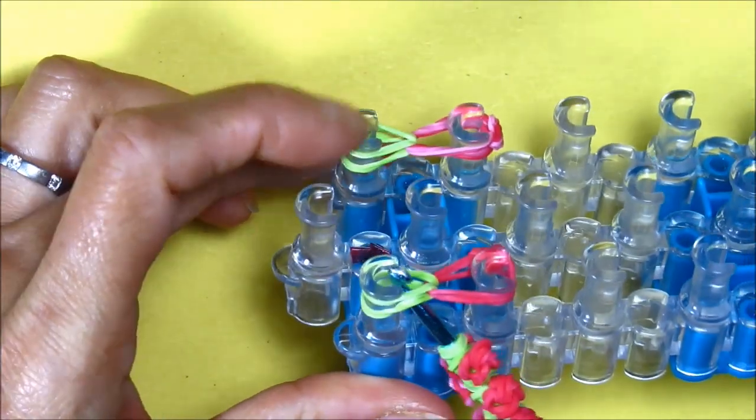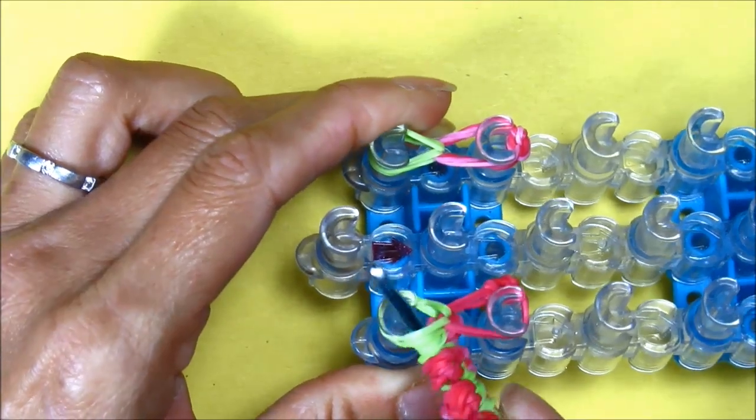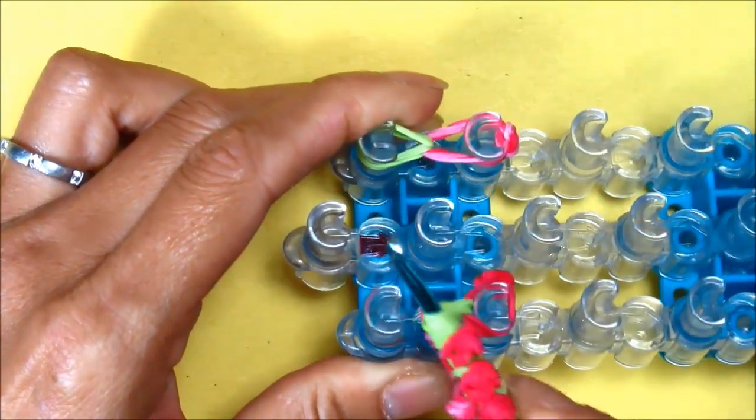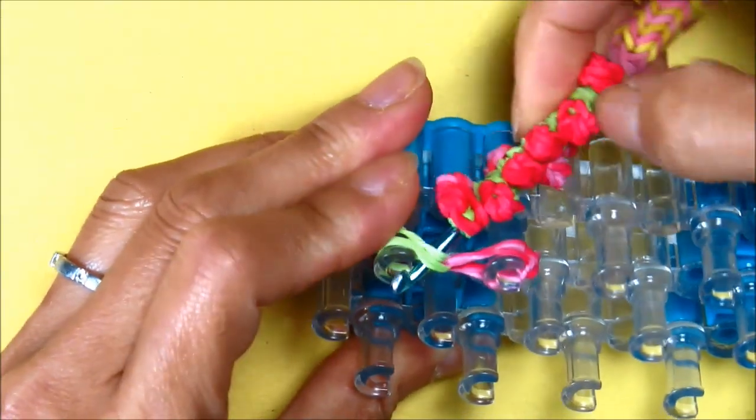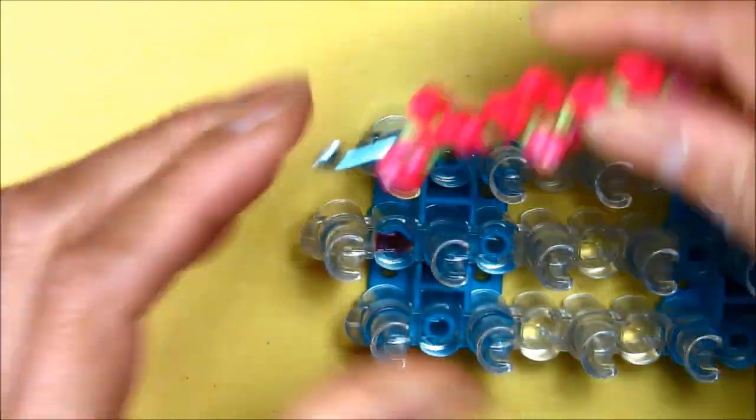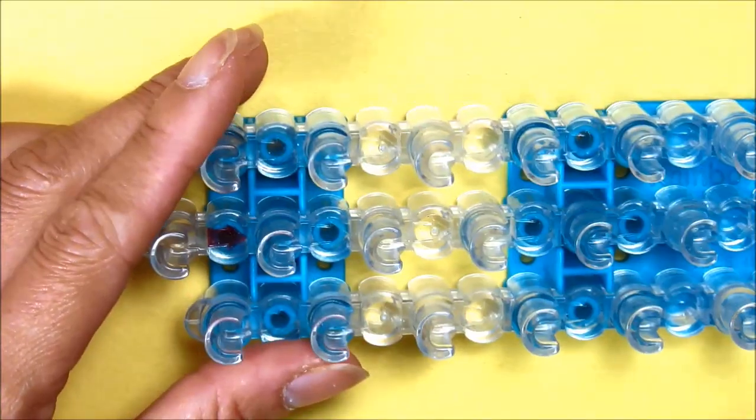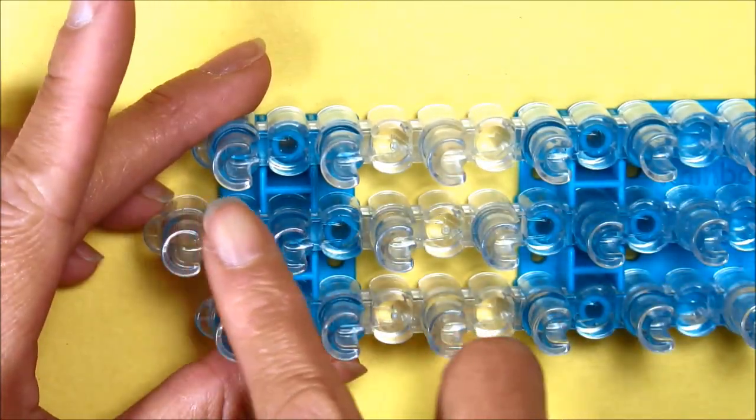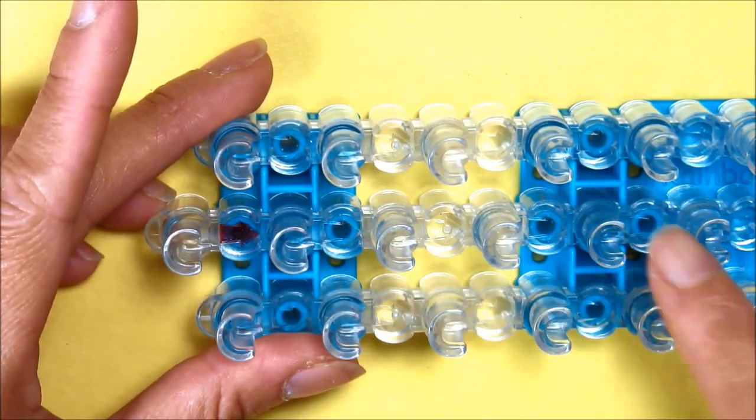So I'll just grab the stem or the leaf of my rosebud, get it on my holding hook in alternating order. Now I'm doing my bracelet with a dark green with our loom in this configuration and the arrow pointing down.